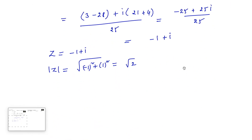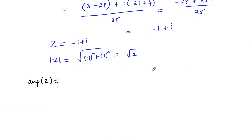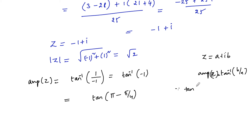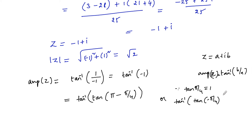Let us check the amplitude. Amplitude of z — since for a complex number z = a + ib, amplitude of z is equal to tan inverse of b/a. So we can write tan inverse of 1/(-1), which is tan inverse of -1. Since tan is negative in the second and fourth quadrant, we can use either tan(π - π/4) for the second quadrant, or tan inverse of tan(-π/4) for the fourth quadrant. So the answer is either π - π/4 or -π/4.